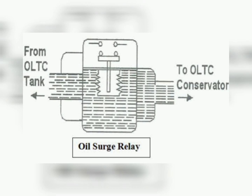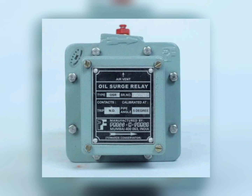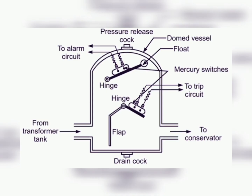Overall, the oil surge relay is an important protection device that helps ensure the safe and reliable operation of the transformer by protecting it from damage caused by oil surge. Additionally, another relay type is designed to detect gas or oil leaks within the transformer, as well as other internal faults that could damage it. When a fault is detected, the relay will trip and shut off the power to the transformer, preventing further damage. It is commonly used in large power transformers and is an important component of the transformer's protection system.